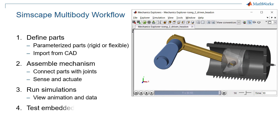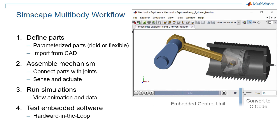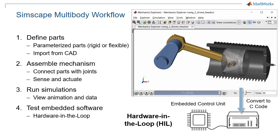The last step is to test embedded software. The model you create can be converted to C code for running on a real-time target. This can be connected to your embedded control unit, which enables you to test your embedded hardware and software without relying on hardware prototypes.